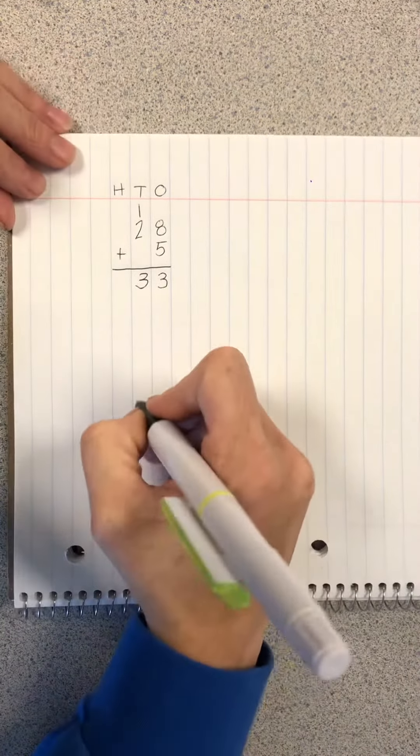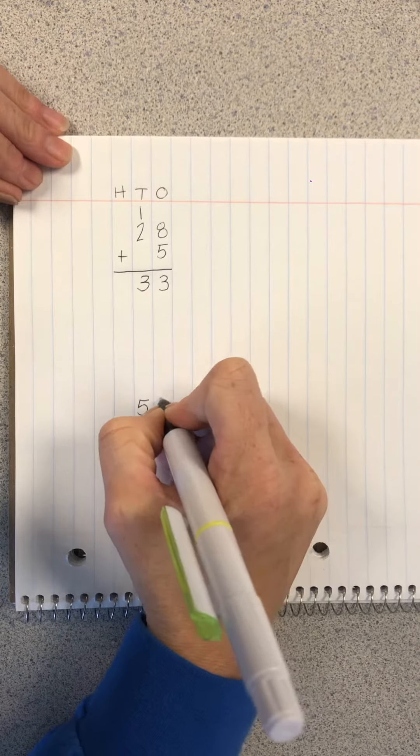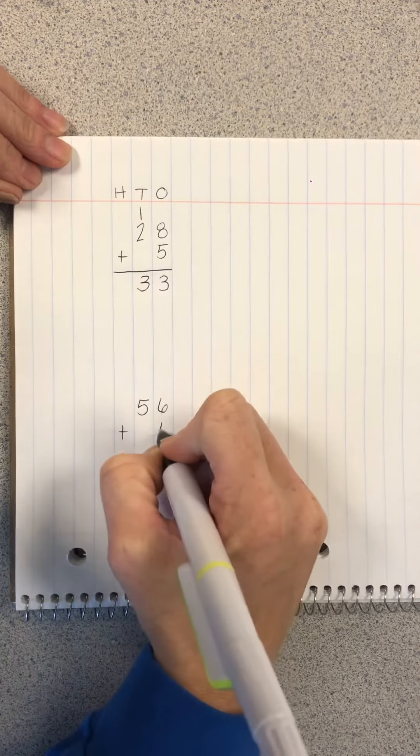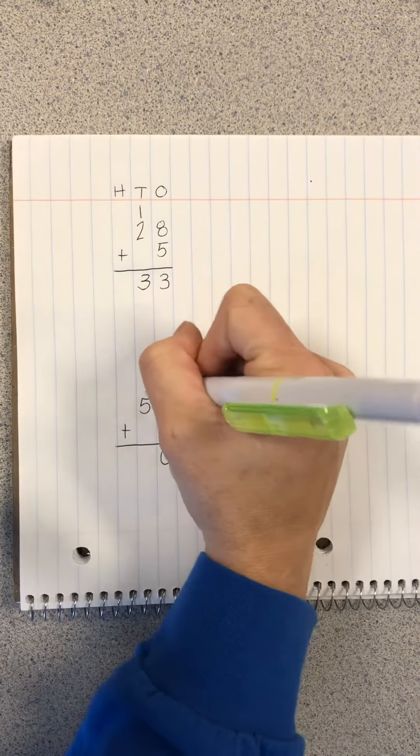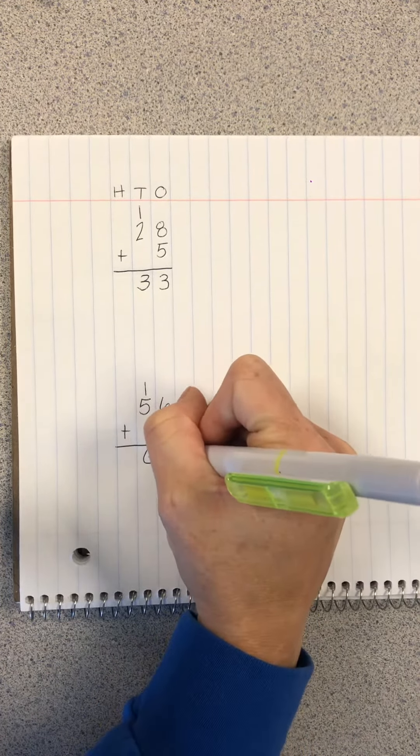Let's try another one. Let's try 56 plus 4. I know 6 and 4 is 10, zero, carry my 1, 5 and 1 is 6, so the answer is 60.